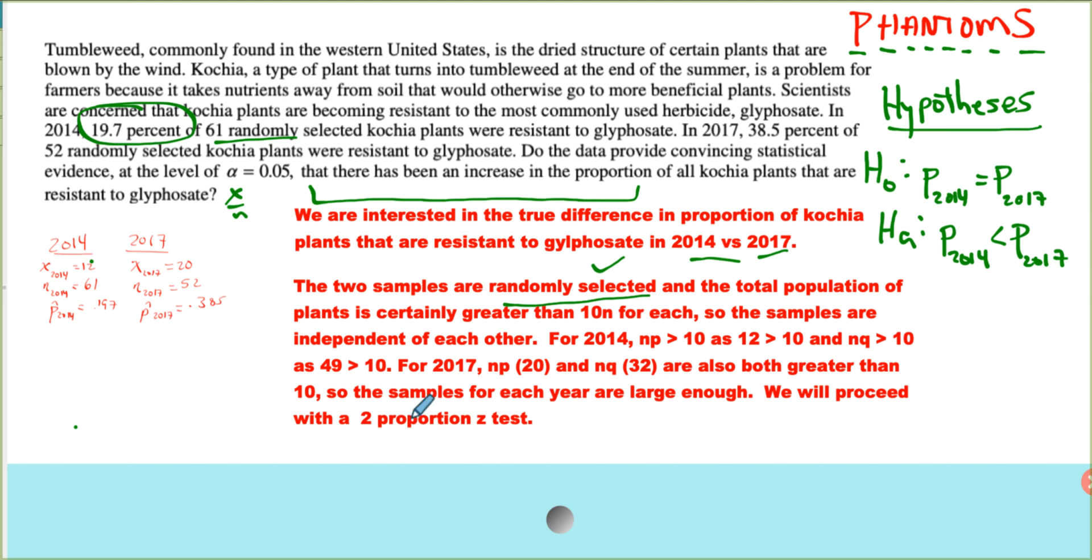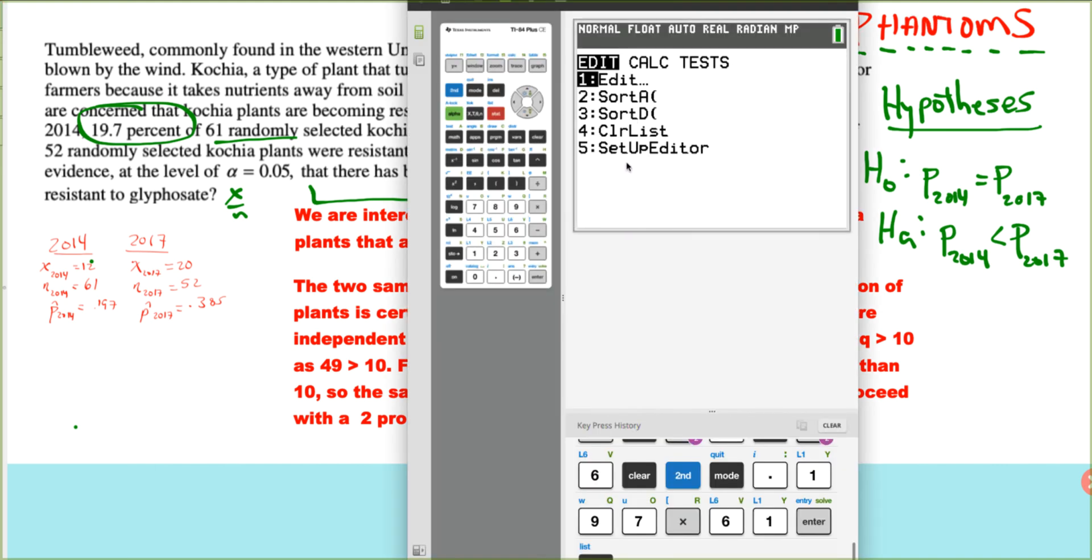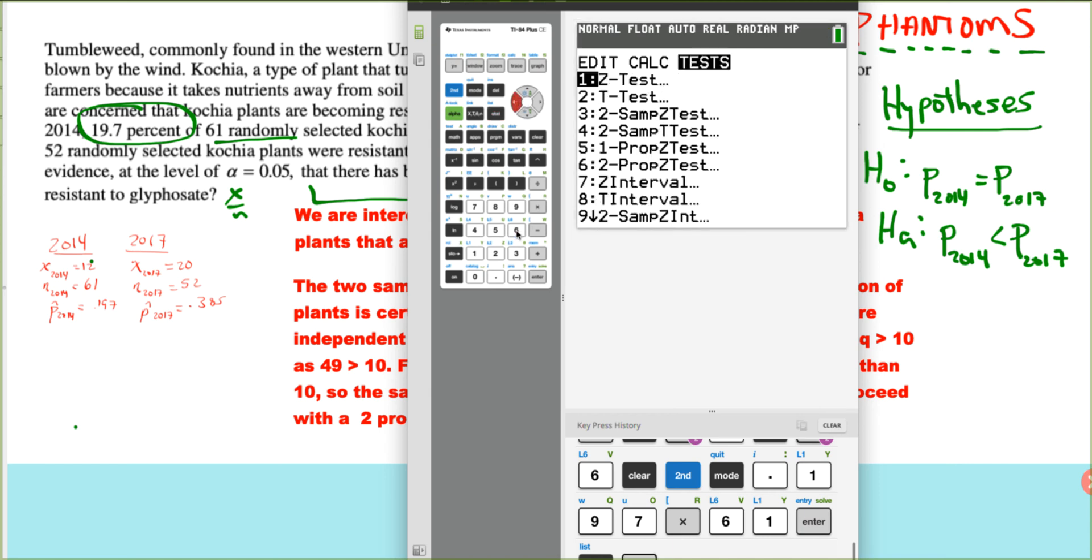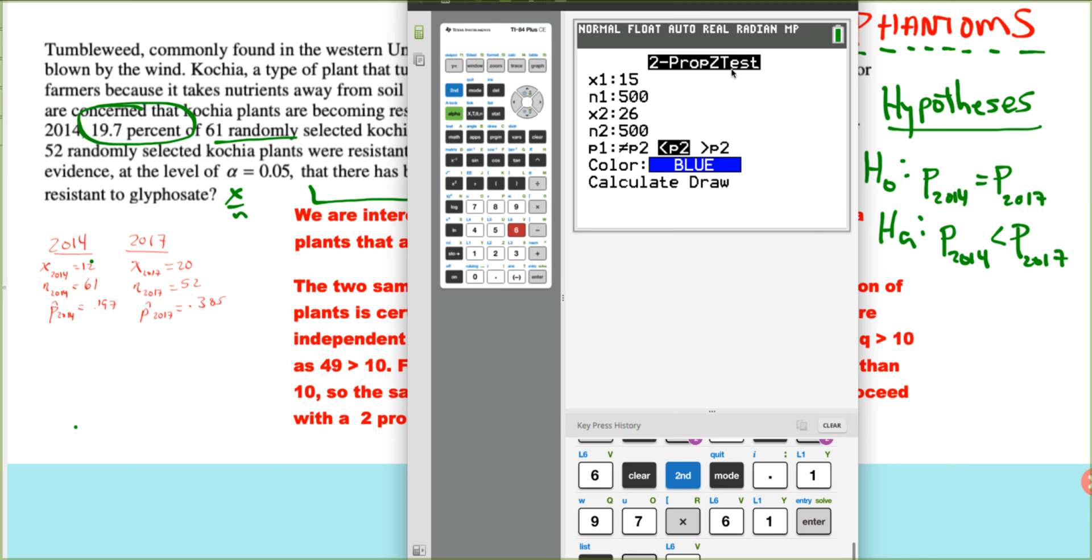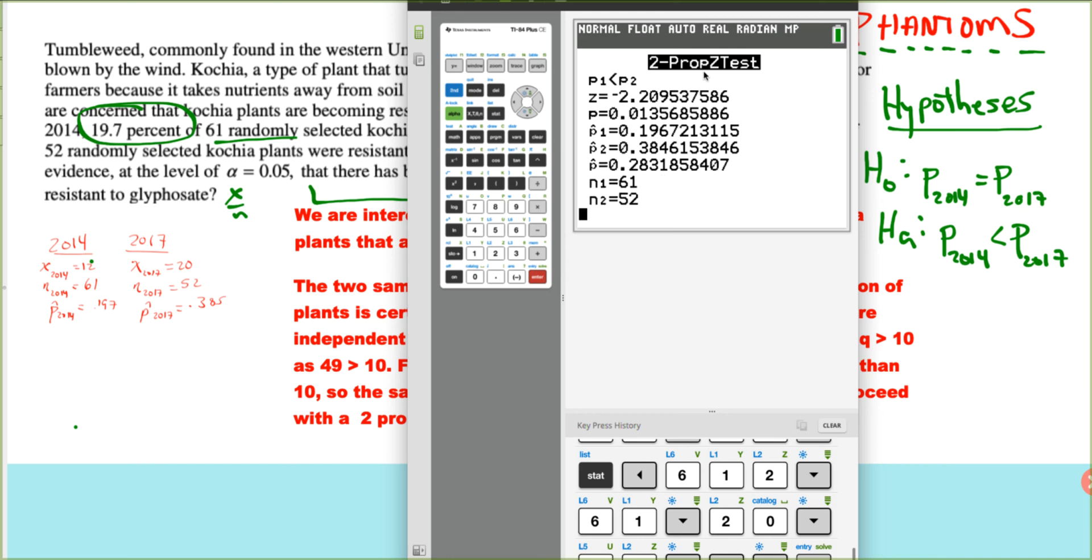We will proceed with a two-proportion Z test. That is the name. So we've done P, H, A, and N already. So in our calculator, we'll pull that up. We hit the stat button, go to the left, and we're looking for two-proportion Z tests. That is choice 6. So our first sample, we have 12 out of 61, and our second sample, we have 20 out of 52. And we are checking to see if 2014 is less than, so we have that correctly indicated right here. We're going to calculate that out. We get a p-value of 0.013.